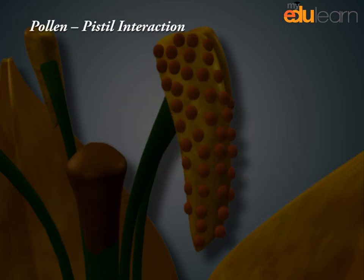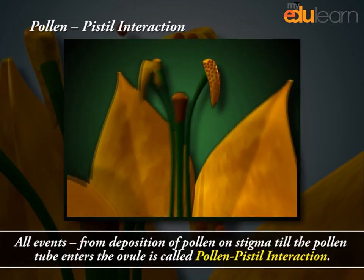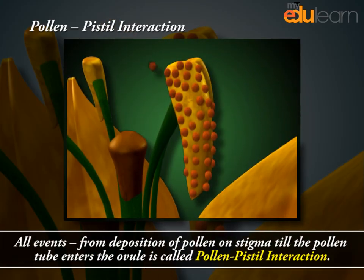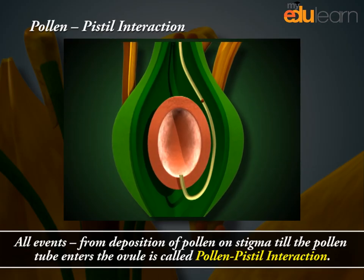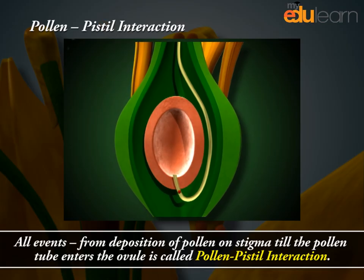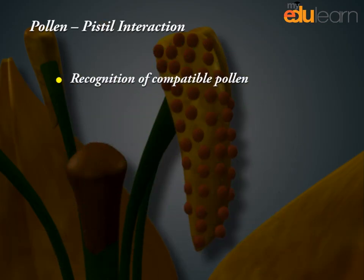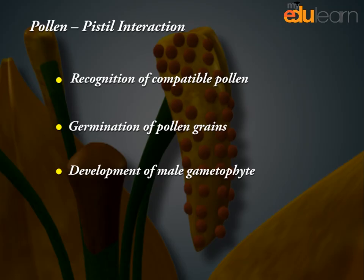Pollen-pistil interaction refers to all events from the deposition of pollen on the stigma until the pollen tube enters the ovule. It involves recognition of compatible pollen, germination of pollen grains, and development of the male gametophyte.